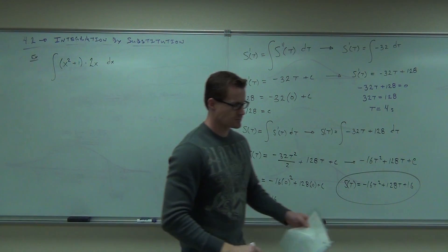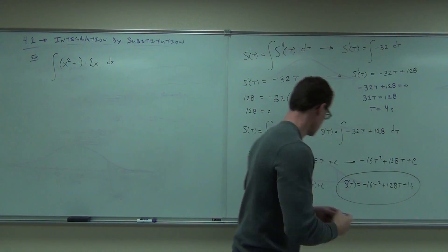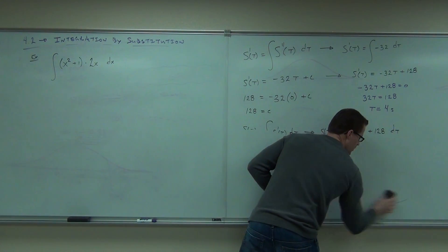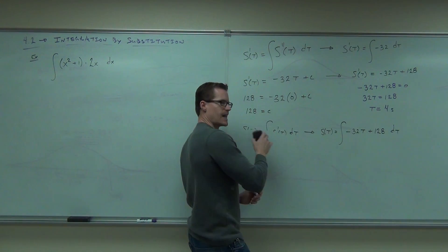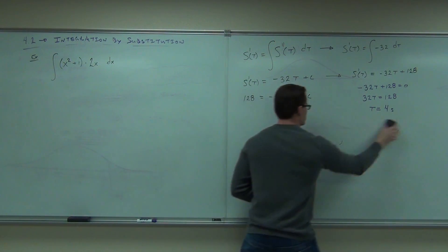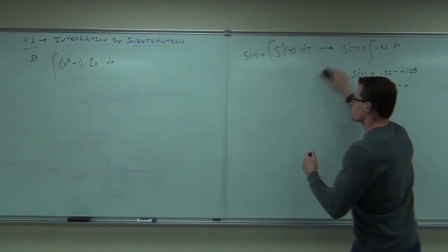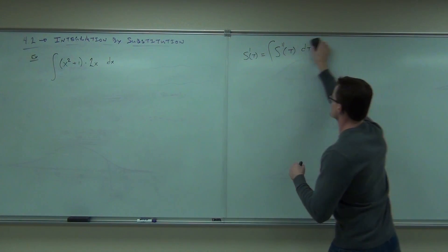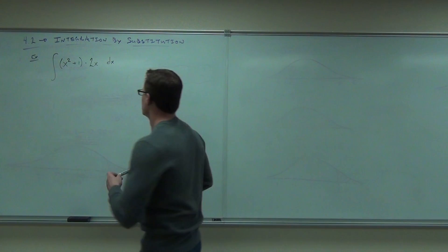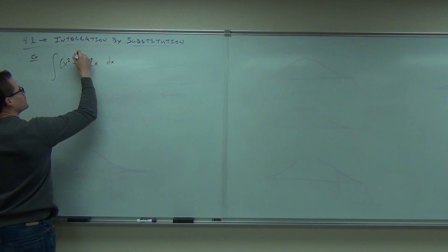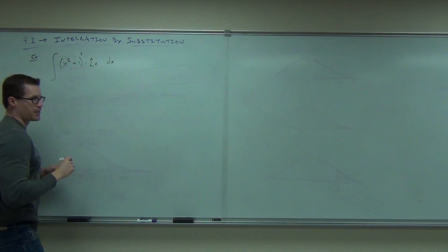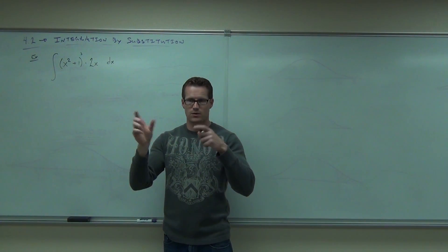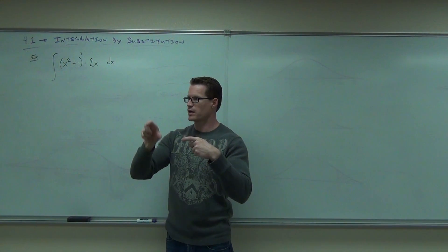It's all about this problem. Write down that problem — we'll talk about it in a second. Does that problem fit your integration table exactly like it is? No. It's got some parentheses, it's got some stuff being multiplied. Knowing what you know right now, how would you do that? Distribute it. And then it'd be very easy, right?